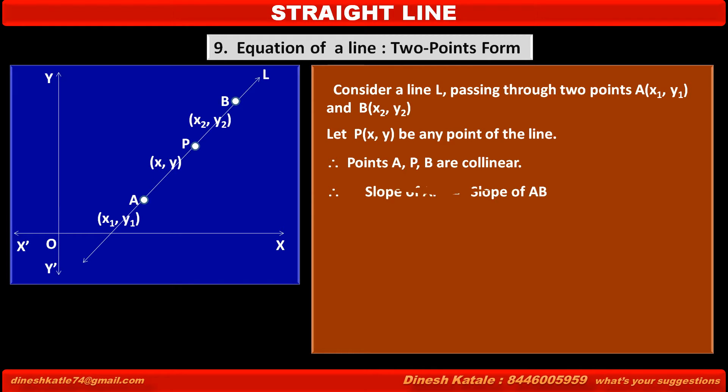Therefore, slope of AP is equal to slope of AB. Substituting the slopes of AP and AB, we get (y - y₁)/(x - x₁) = (y₂ - y₁)/(x₂ - x₁).